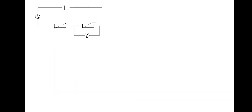The next question: explain what occurs to the voltmeter reading when the resistance of the variable resistor is increased and the thermistor is kept at a constant temperature. If we increase the resistance of the variable resistor, then its voltage share must also increase, which consequently means the voltage share across the thermistor would decrease — because there's only a certain amount of total voltage available to the circuit.